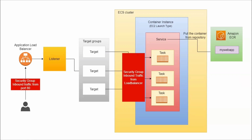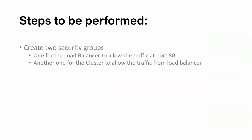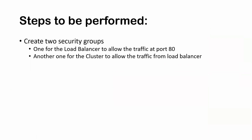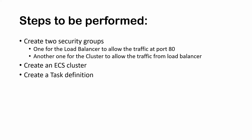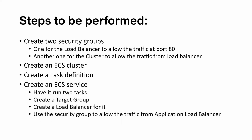Here are the steps we'll be performing in this lecture: first, we'll create two security groups — one for the load balancer to allow traffic on port 80, and another for the cluster to allow traffic from the load balancer. Then we'll create an ECS cluster, a task definition, and finally an ECS service associated with a load balancer. Let's go to our AWS dashboard and start implementing.